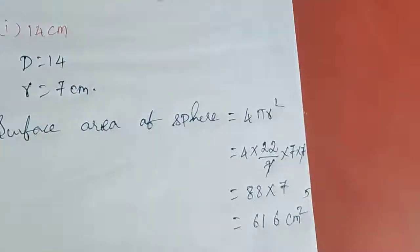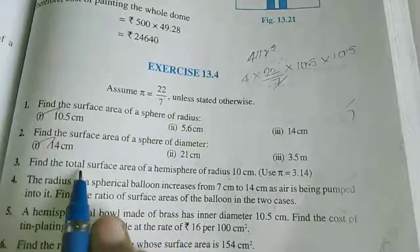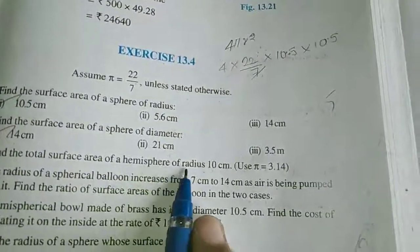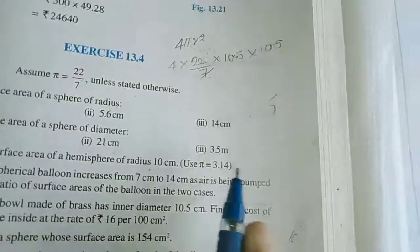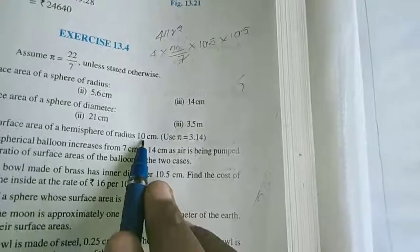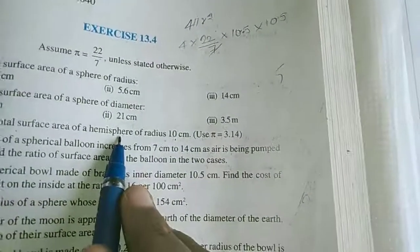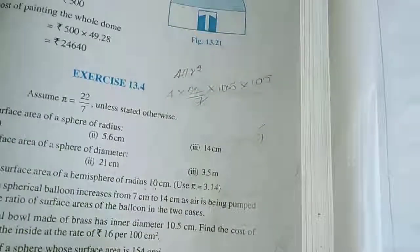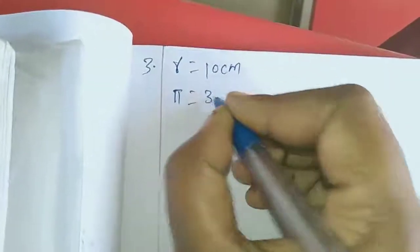This is the value for the second row, first sum. Now we move to the third sum: Find the total surface area of the hemisphere of radius 10 centimeter. Use π = 3.14. So for π we apply 3.14, and radius is 10 centimeter.